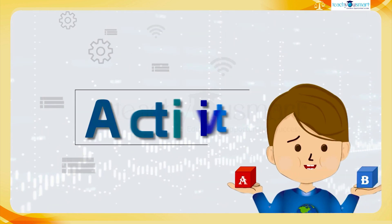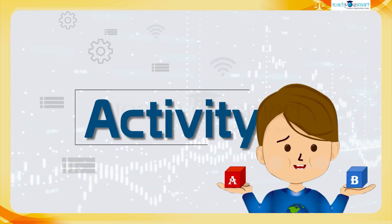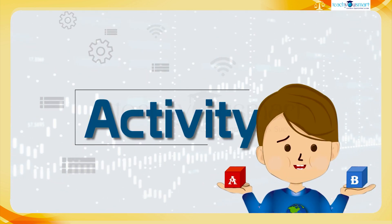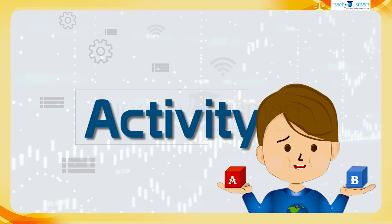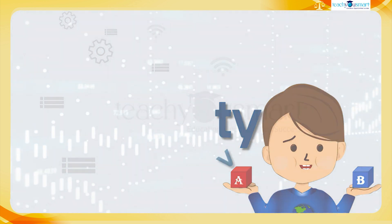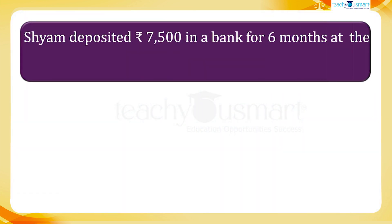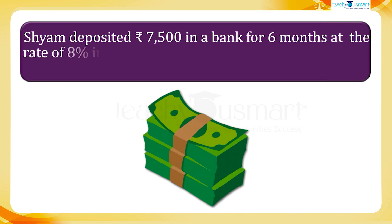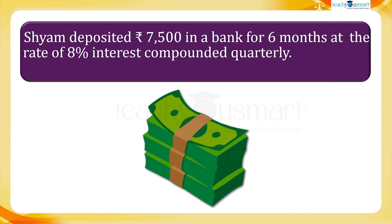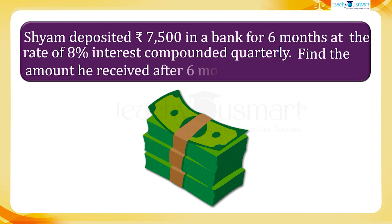Before winding up, let's check how much you understood by doing an activity. Shyam deposited 7,500 rupees in a bank for six months at the rate of 8% interest compounded quarterly. Find the amount he received after six months.